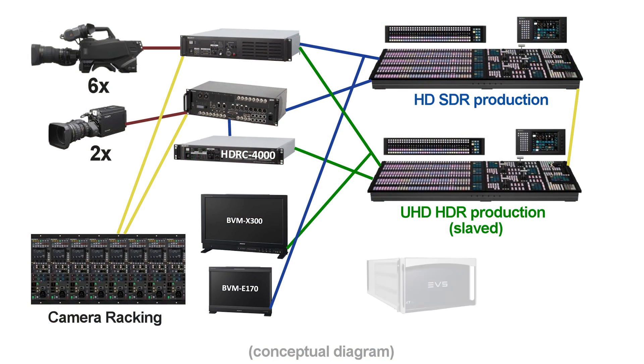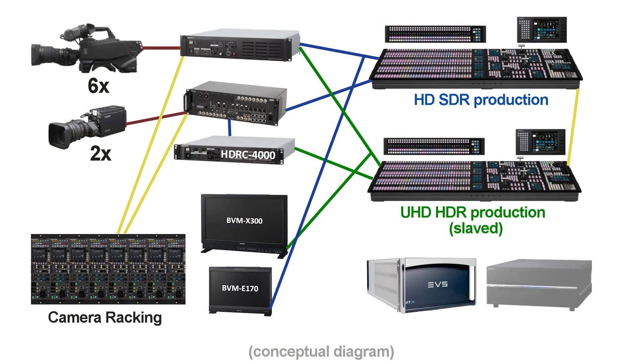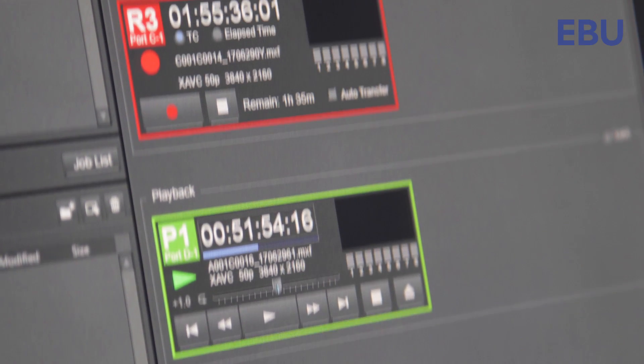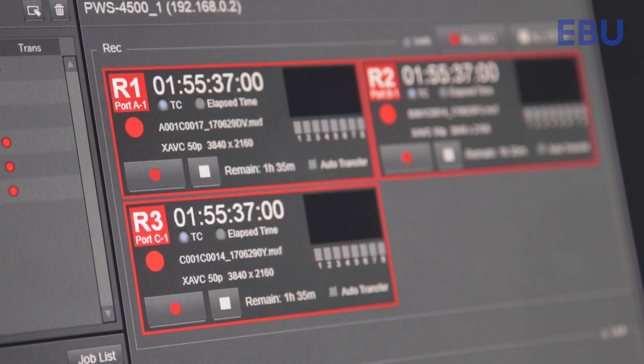One of the challenges we have here is the recording. We use EVS and Sony equipment to record X-AVC Intra class 300 or class 480, depending on the program. We record seven streams — six cameras plus one program. And at the end, this 10-bit material can amount to 5 terabytes for one concert.